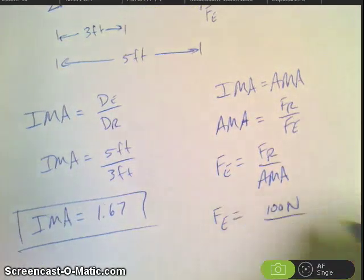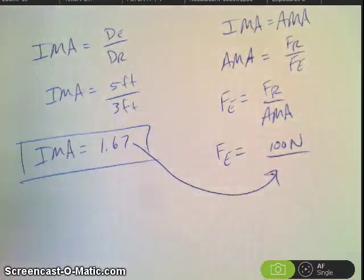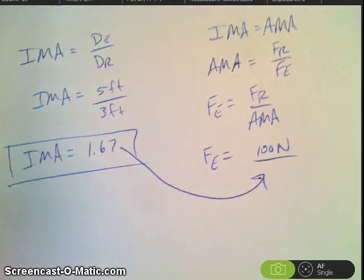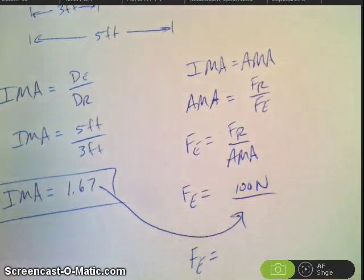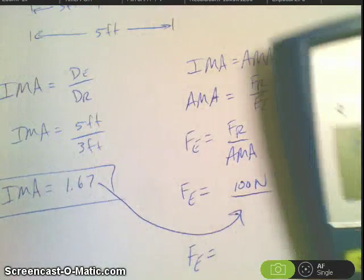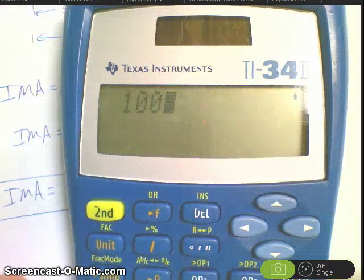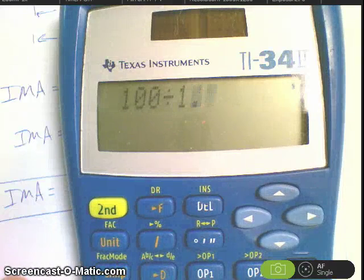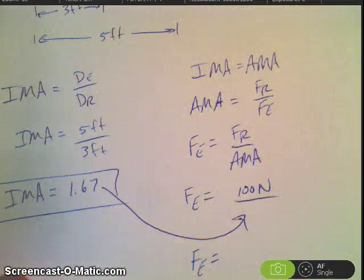We have 100 newtons and the AMA is the same as the IMA. So when we solve for the effort force, we have 100 divided by, which then rounds to 60.